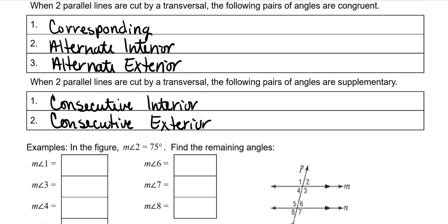Also, you will frequently see vertical angles used, which will also be congruent, and you also will see linear pairs, which would also be supplementary. But those two you should already know — we're just going over that again.